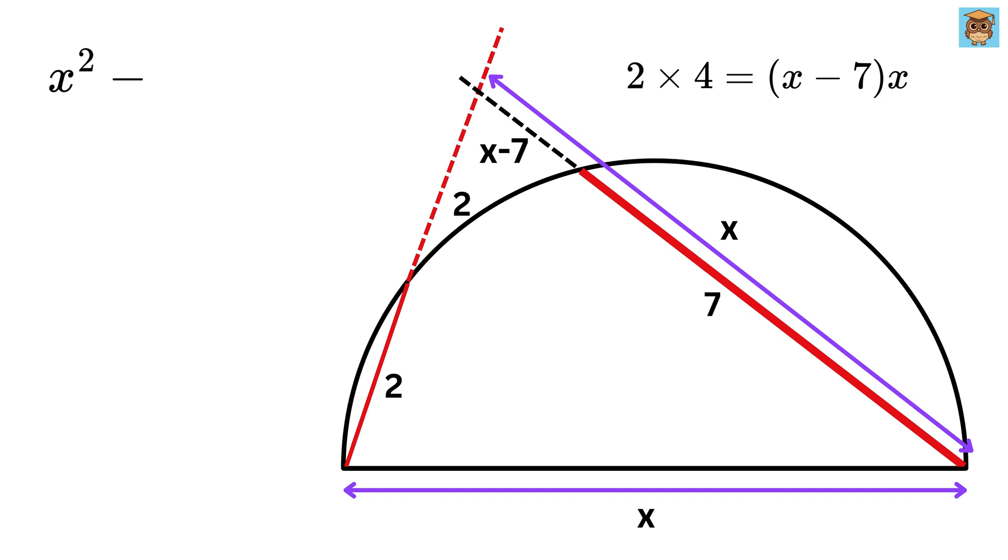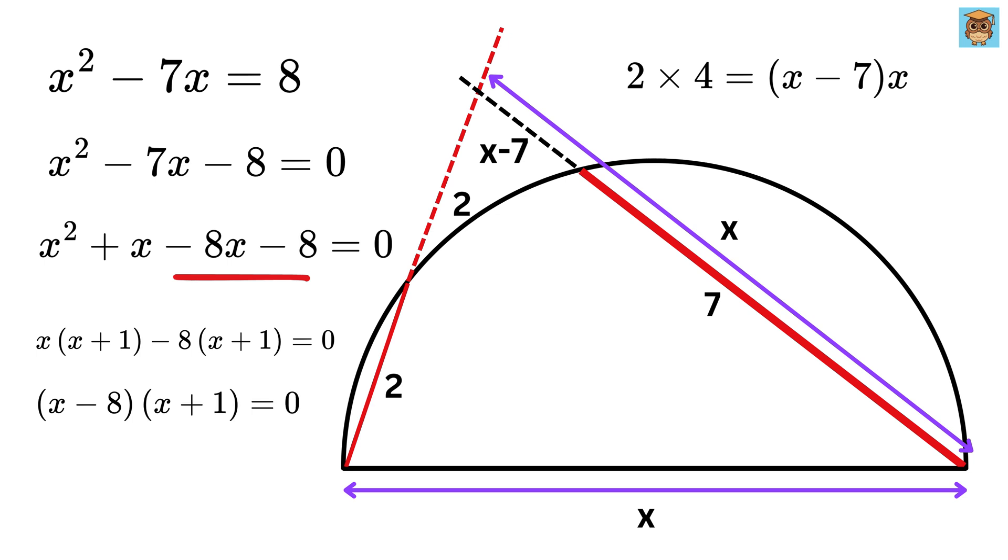Expand to get X squared minus 7X minus 8 equals 0. Now we can rewrite this as X squared plus X minus 8X minus 8 equals 0. Take X as common here, to get X times X plus 1, and then take minus 8 common here, to get minus 8 times X plus 1. So we get this as X minus 8 times X plus 1 equals 0.